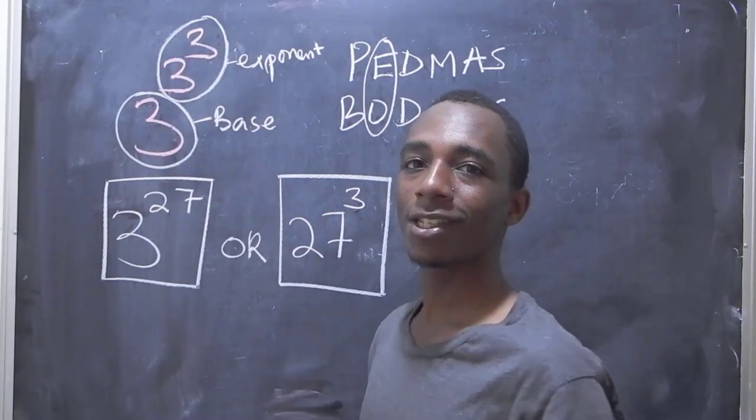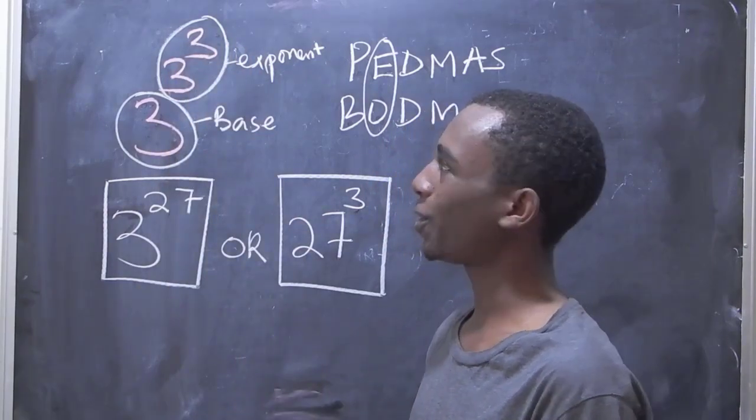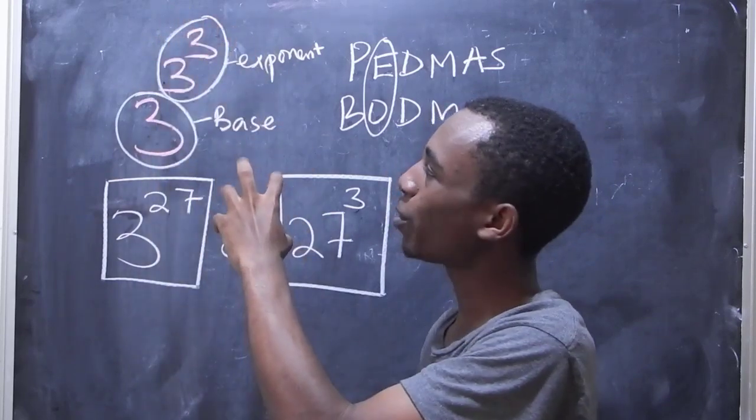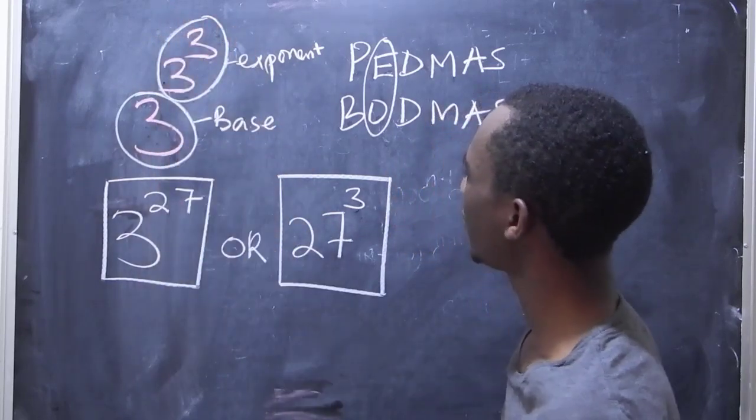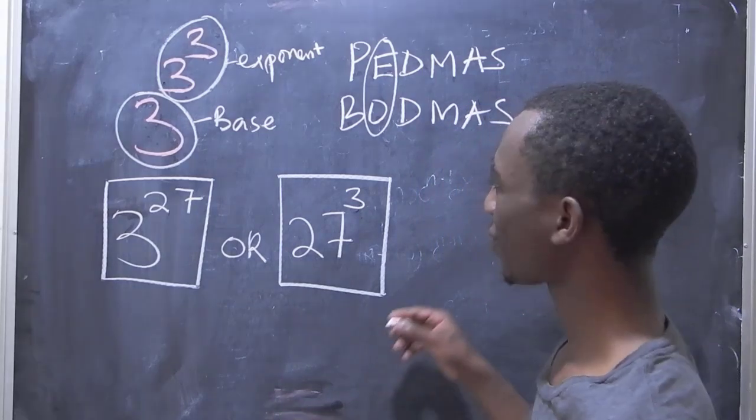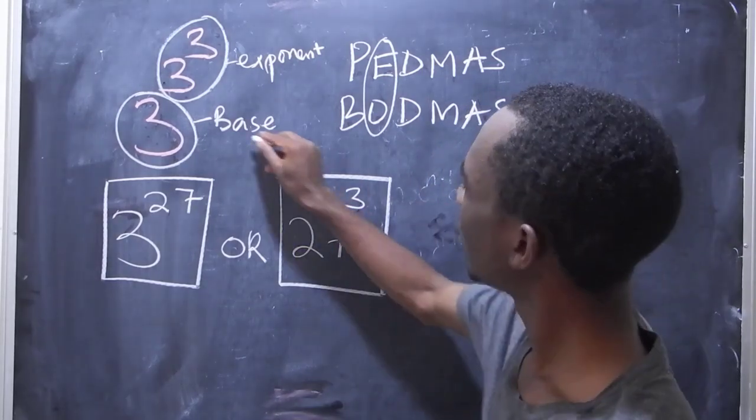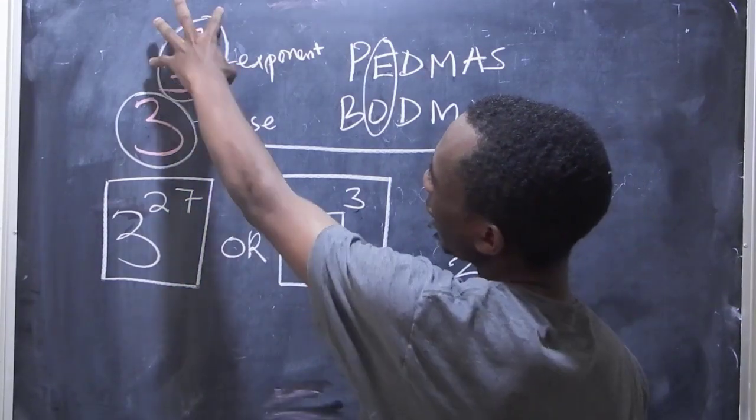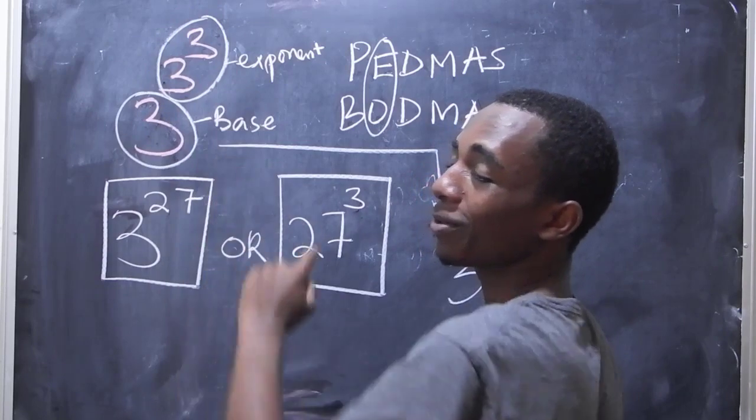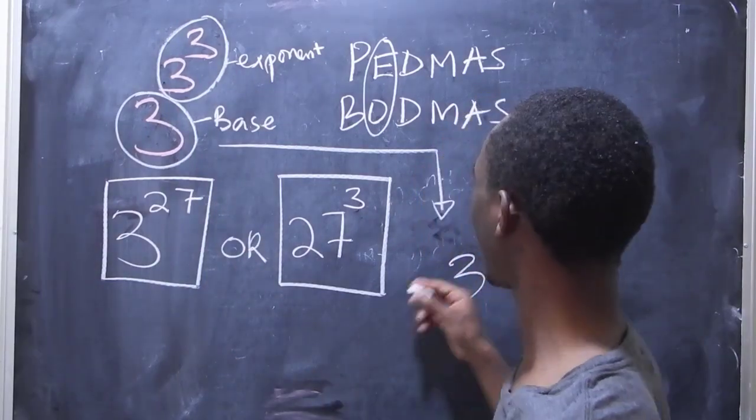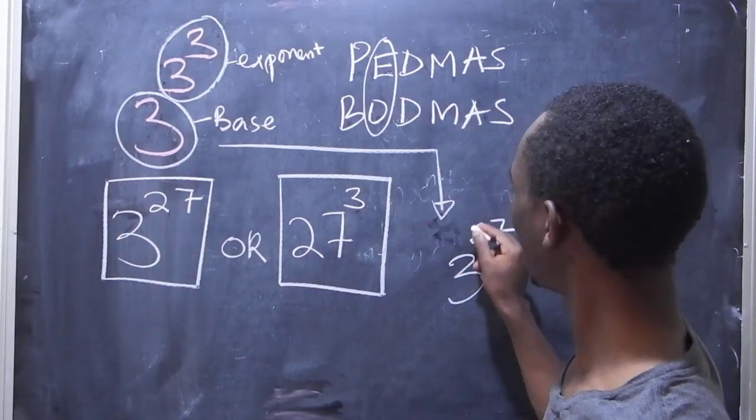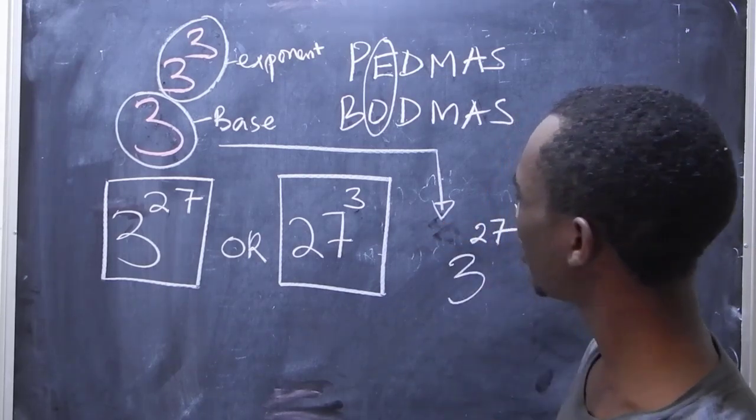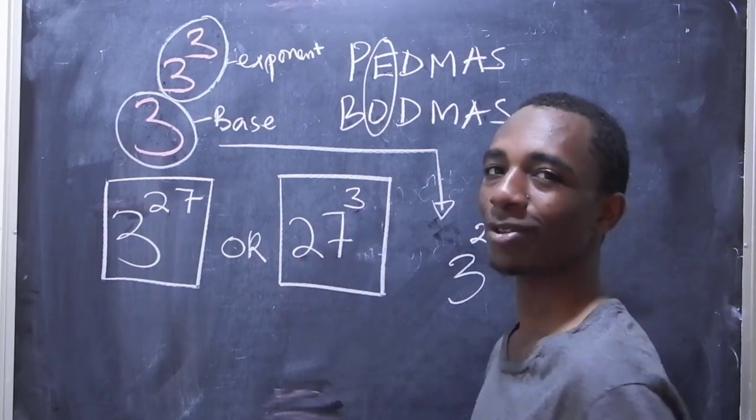So the exponent itself contains another exponent. So what we are going to do here is to first evaluate whatever is in the exponent, and then we'll keep the base as it is, which means our solution here is 3. So let's show you this. So we have 3 to the power, so the exponent is 3 to the power 3, which is obviously 27. So there we have it. 3 to the power 27 is the final correct solution to this problem, and not 27 to the power 3.